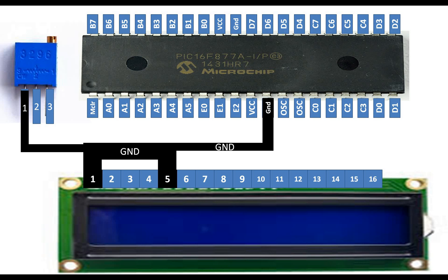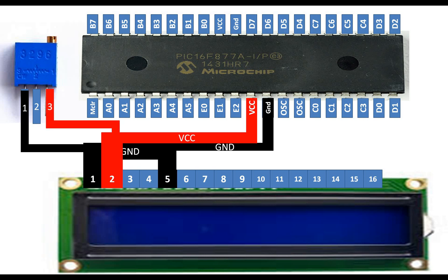Now connect pin number 2 of the LCD to the 5-volt supply of the PIC, or simply common it with the VCC pin of the PIC 16F877A. Then also common pin number 3 of the variable resistor with the 5-volt pin. In this way the LCD gets 5 volts and the variable resistor also gets 5 volts.